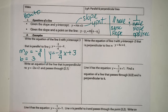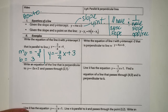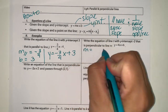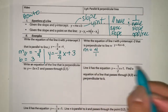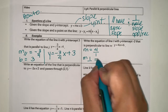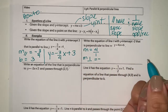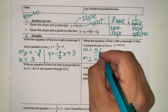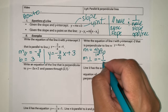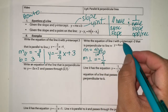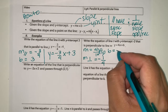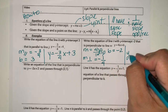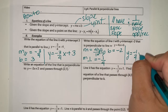Next, write the equation of line t with y-intercept negative 2 that is perpendicular to line n: y equals 4x plus 6. The original slope m is 4, or 4 over 1. The slope of my perpendicular line is the opposite sign — negative — and then the reciprocal, which we flip: 1 over 4. The y-intercept b is negative 2. So: y equals negative 1 fourth x minus 2.